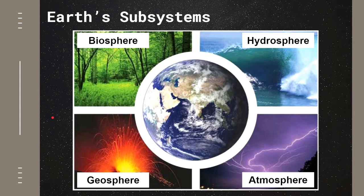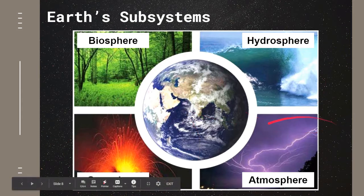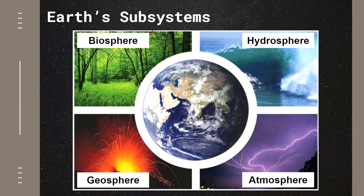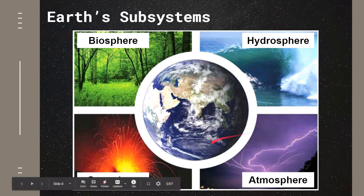So if we consider Earth as a system made up of parts, these are the subsystems of our planet: the biosphere, hydrosphere, geosphere, and atmosphere. The biosphere refers to the region of the Earth that is capable of supplying and nourishing life — those are your living organisms. The hydrosphere is the water component of the Earth. The atmosphere is where the air and gases are found. And the geosphere is where the solid parts of the Earth are found.